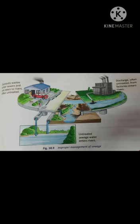Due to improper management of waste, there is sometimes discharge of untreated sewage into water bodies. In most large cities, partly treated sewage is disposed of into rivers. Rivers like the Ganga and Yamuna have become open drains for sewage disposal, making the river water unfit for use and also harming the plants and animals living in them.